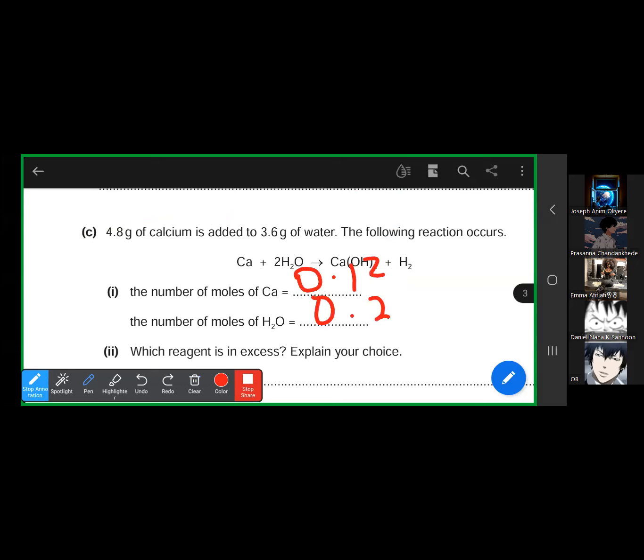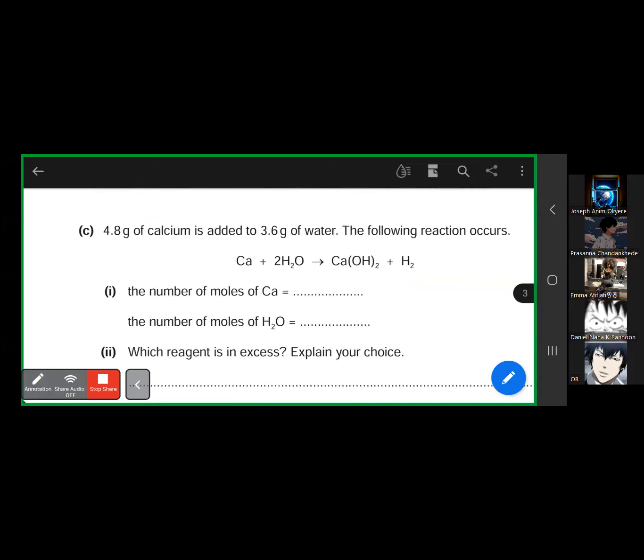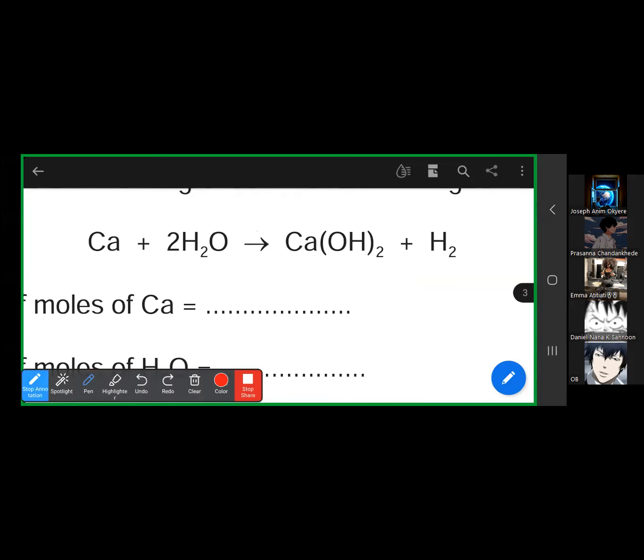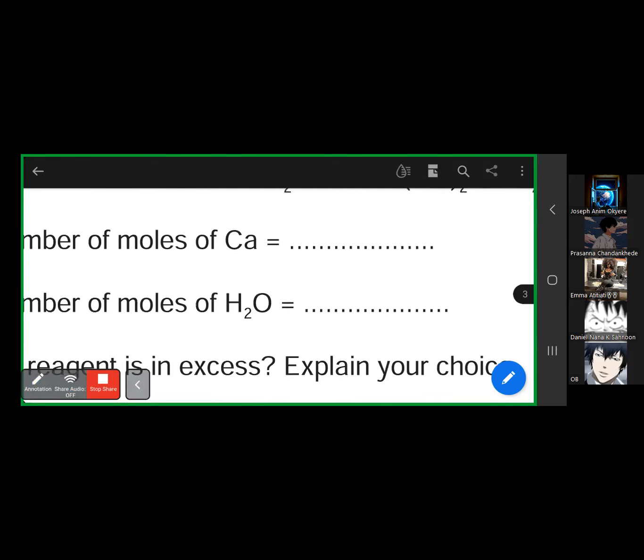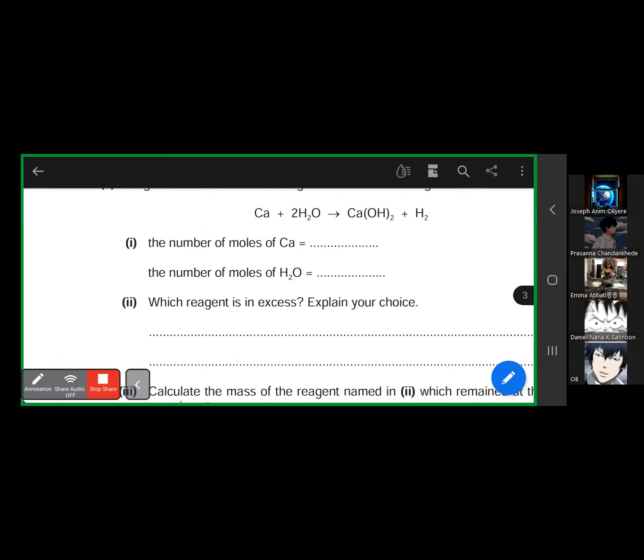So here is 0.12, here is 0.2. That's 3.6 divided by 18 equals 0.2. Now which reagent is in excess? Don't just look at the moles of calcium and water and conclude. You're going to use the equation to find the limiting reactant and then the reactant which is in excess. Calcium is 0.12, water is 0.2. To find the limiting reactant, divide by the balanced numbers. I'm going to divide this one by one, this one by two. This one gives 0.12, this one gives 0.1. So obviously calcium is in excess because 0.12 is bigger than 0.1.